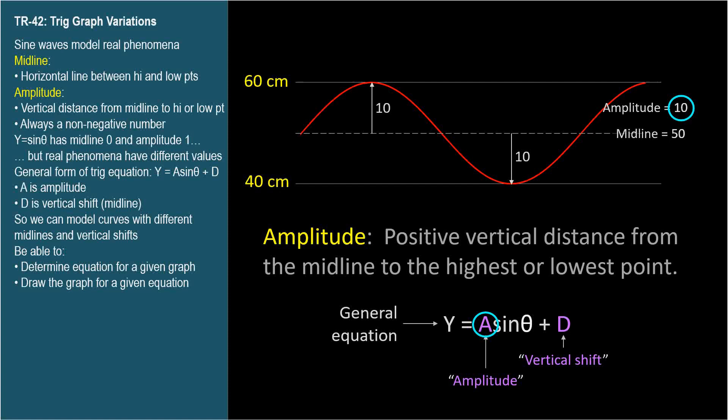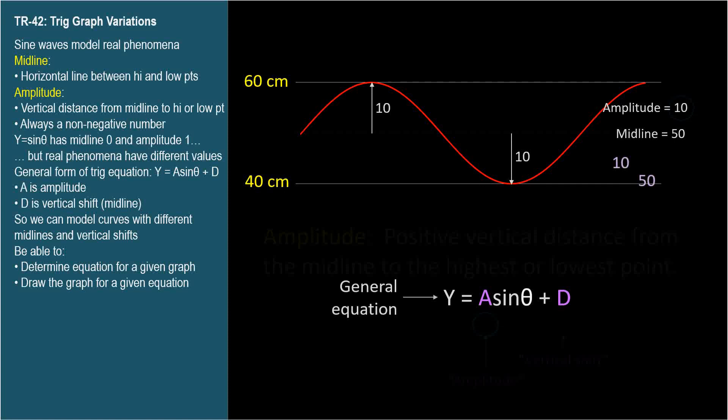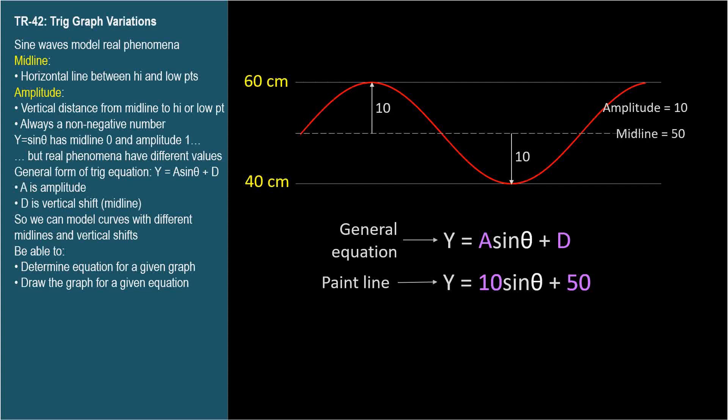When expressing transformed trig equations in general terms, the amplitude is usually given the variable capital A. So we have a general form of the equation that looks like this: y equals A sine theta plus D. To this general equation, we'll add two more parameters in the next video.